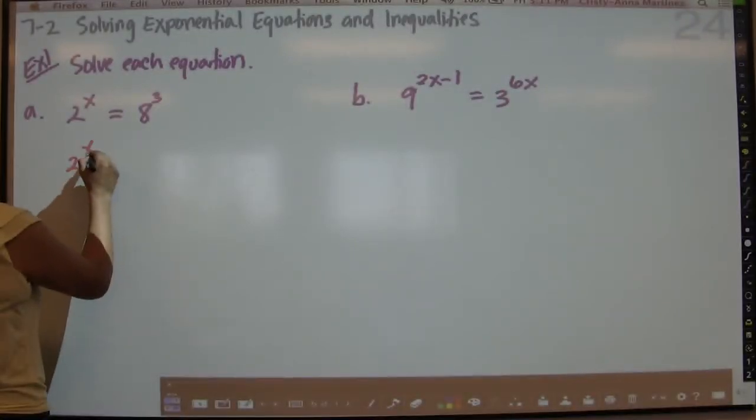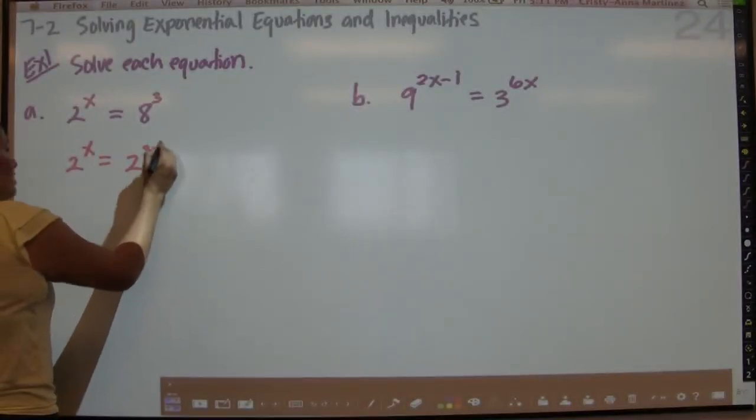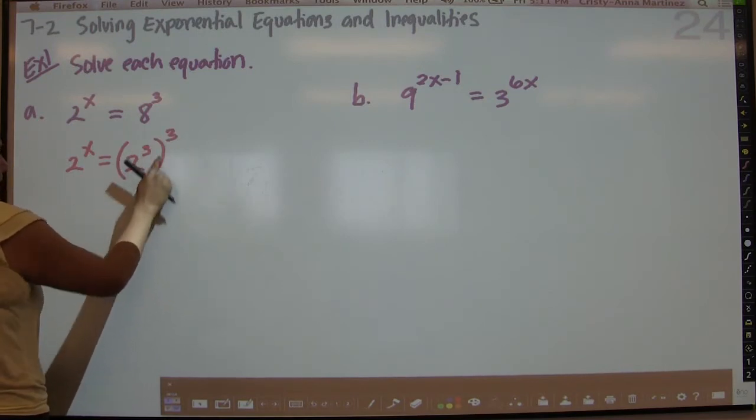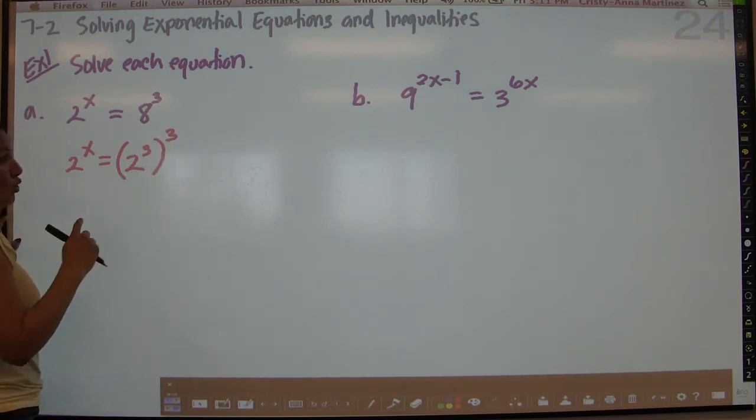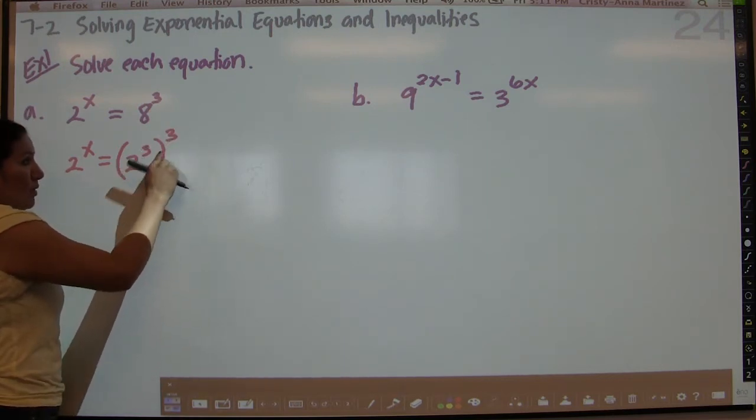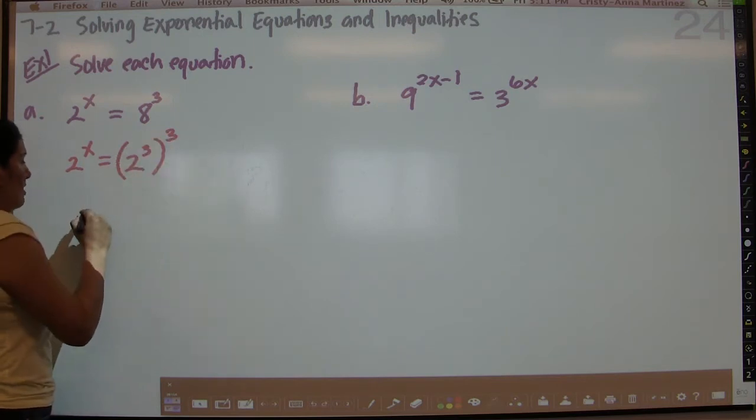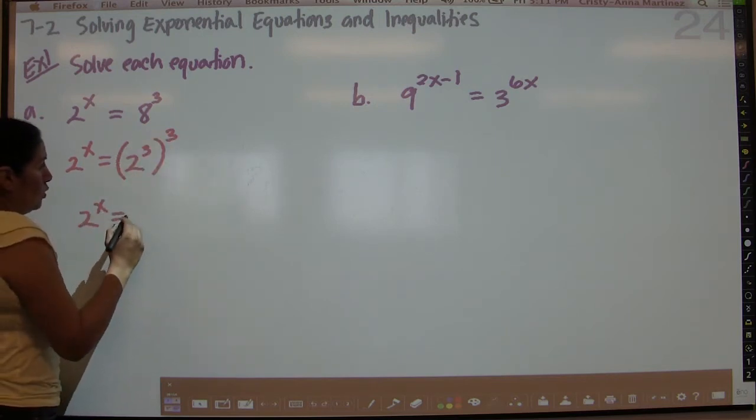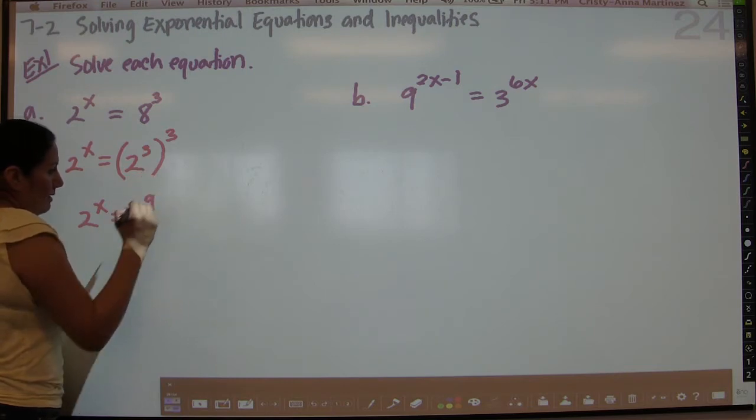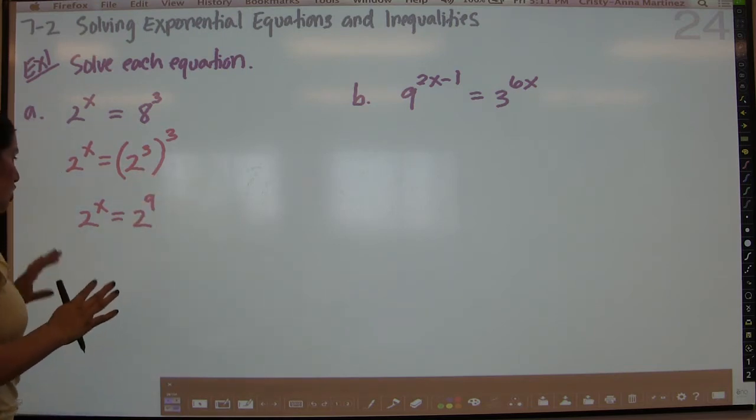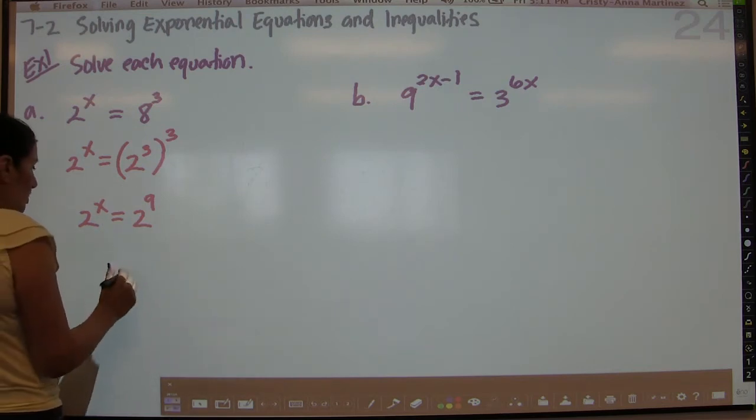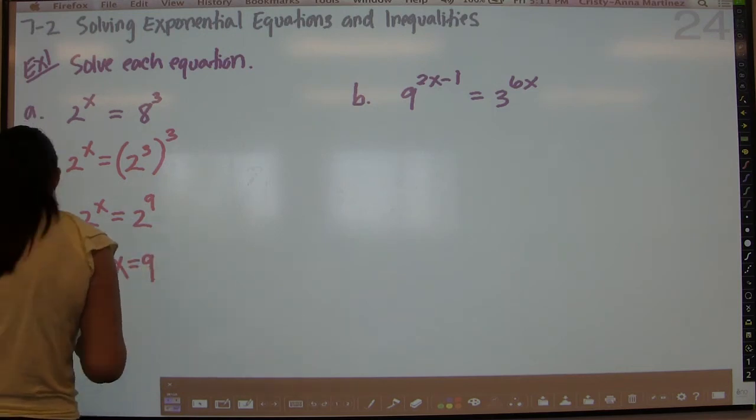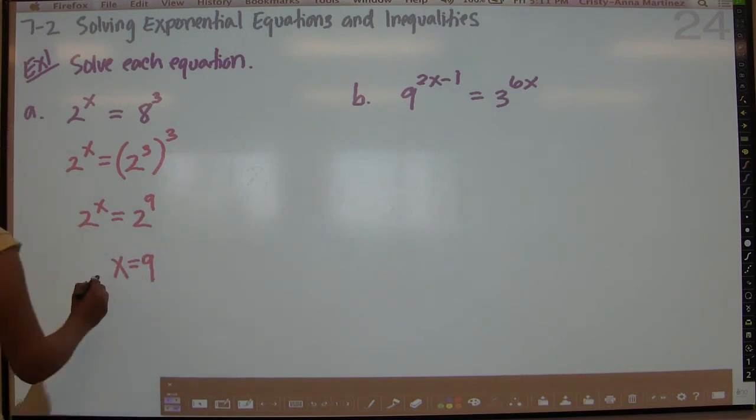Because the 8 will be represented by 2 cubed, and then we have the cube from here. And then if we use the rule that we know, we multiply the exponents if you have a power raised to a power, now you have 2 to the x equals 2 to the 9. So now that we look at it, the only way for these two sides of the equation to be equal is for their exponents to be equal. So these two expressions will only be equal if x equals 9. And that is how you solve.